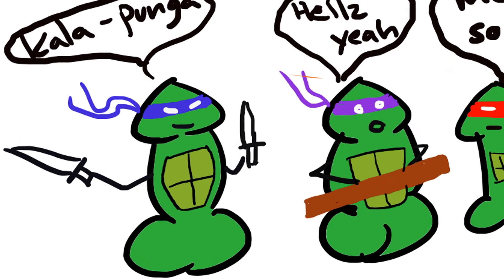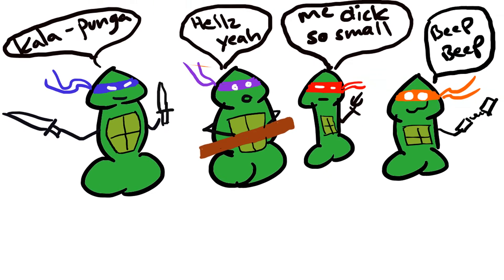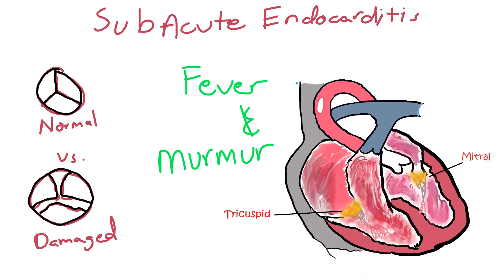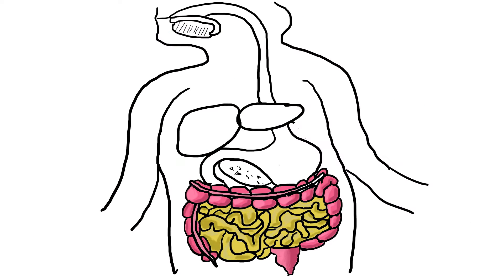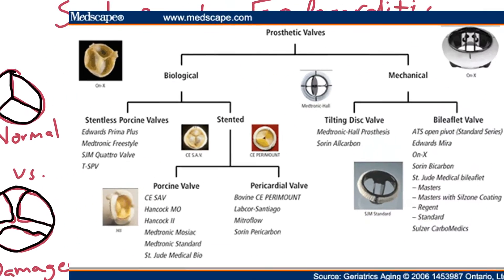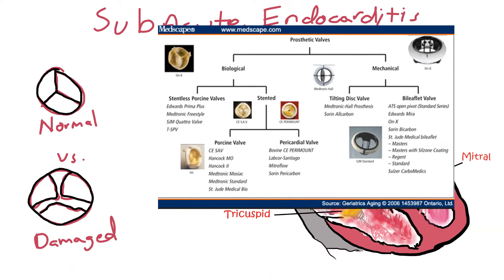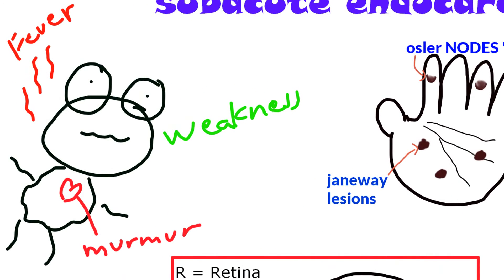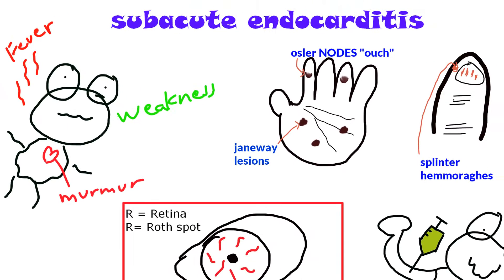Streptococcus bovis is probably the most high-yield. It's known to cause subacute endocarditis — not acute endocarditis, which comes from Staphylococcus aureus — and it also causes colon cancer. Subacute endocarditis only occurs with a damaged valve or a prosthetic valve, and the onset is usually slower. It uses dextran to attach to the damaged heart valve, presenting with a murmur from valve destruction, turbulent flow, low-grade fever, and systemic weakness.